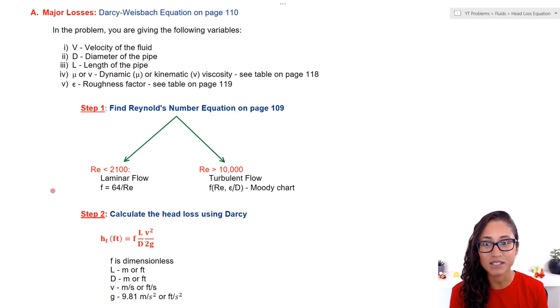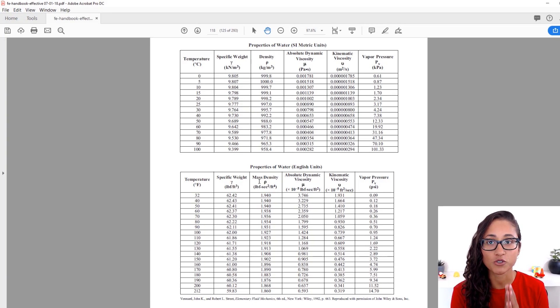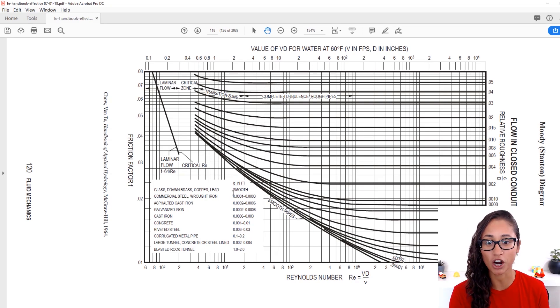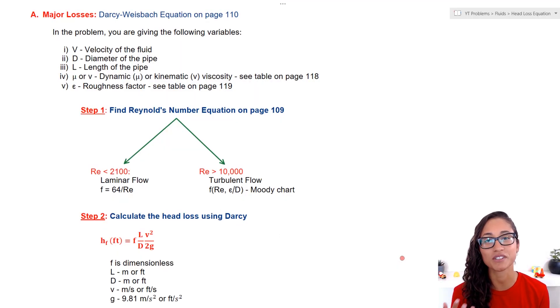Most of the time, these variables will be given to you. However, you should know that these variables can also be found on the reference manual. If we go to page 118, you are given two tables: one for SI units, the other one is English units. You are given the dynamic and kinematic viscosity. On page 119, we are given the roughness factor.